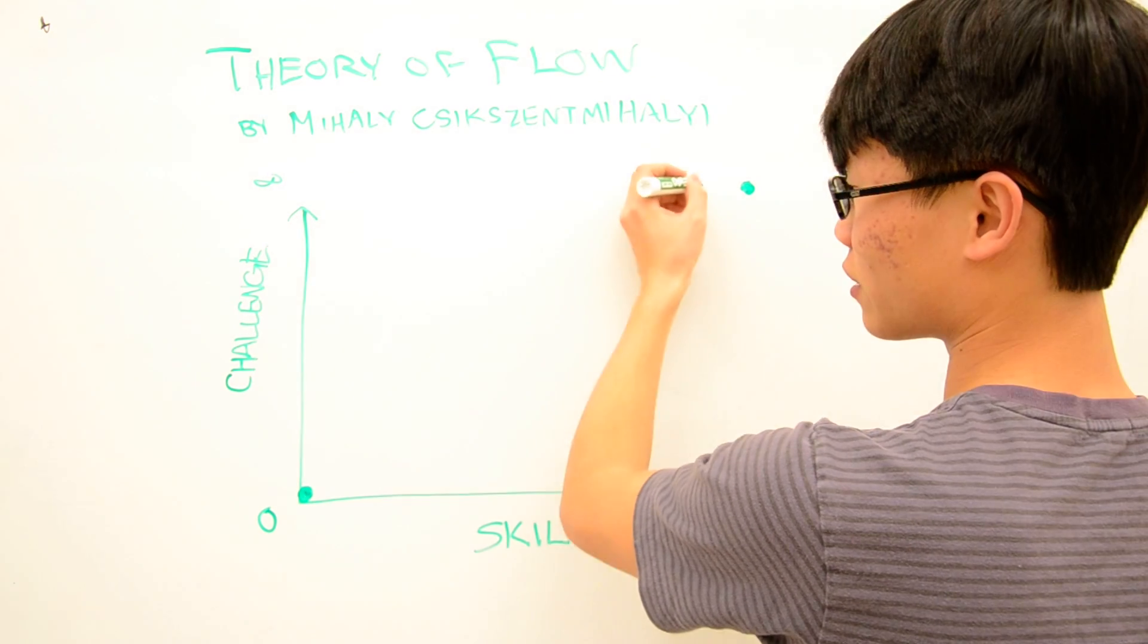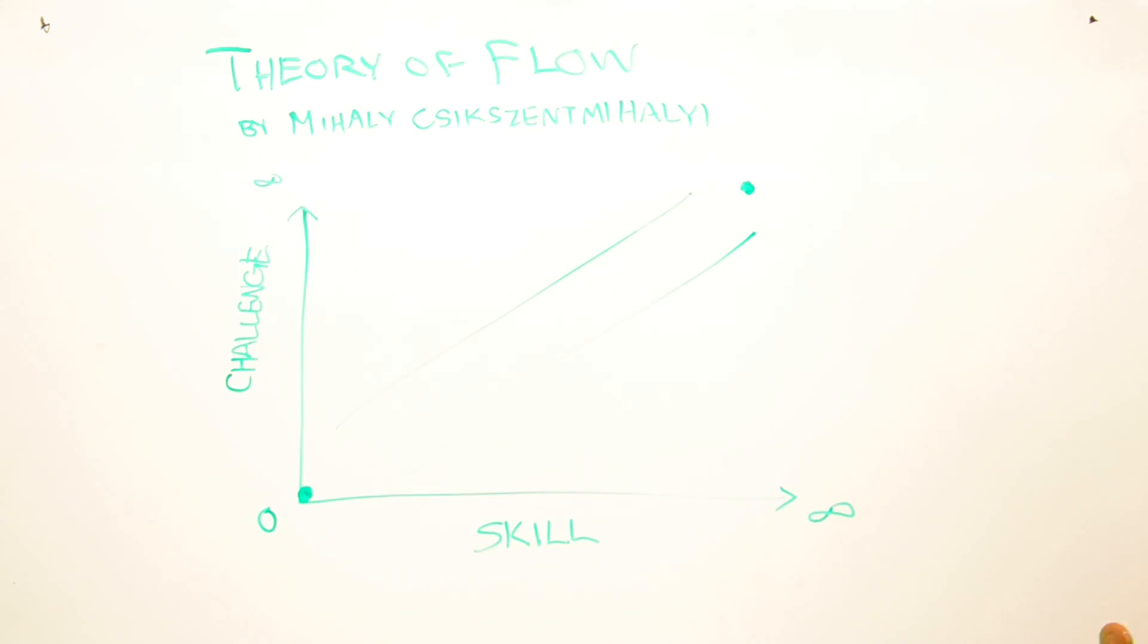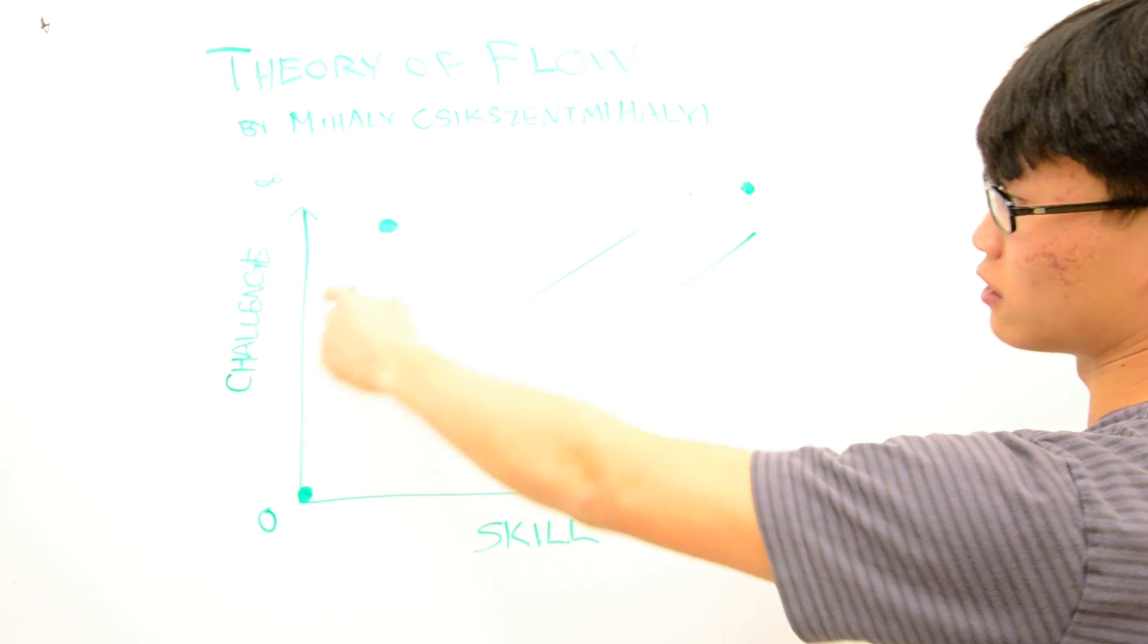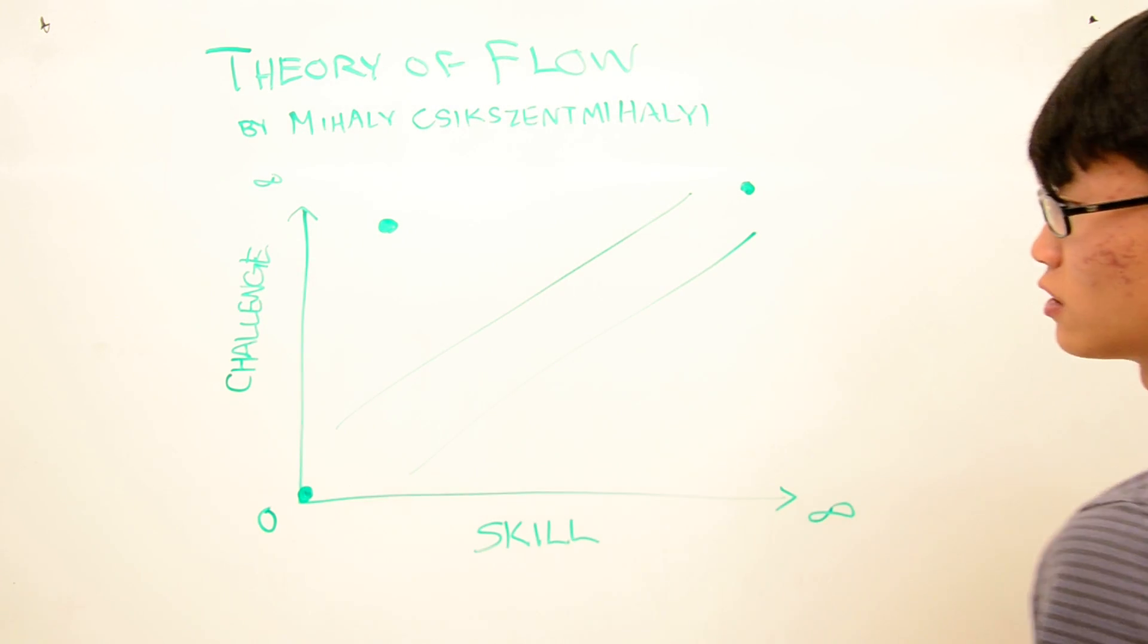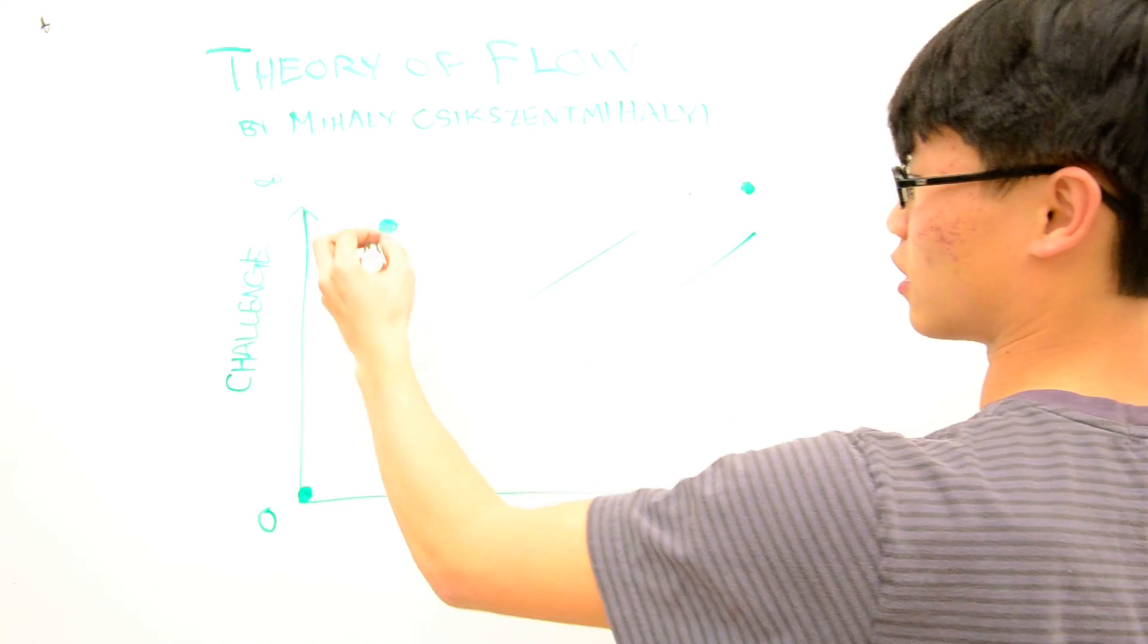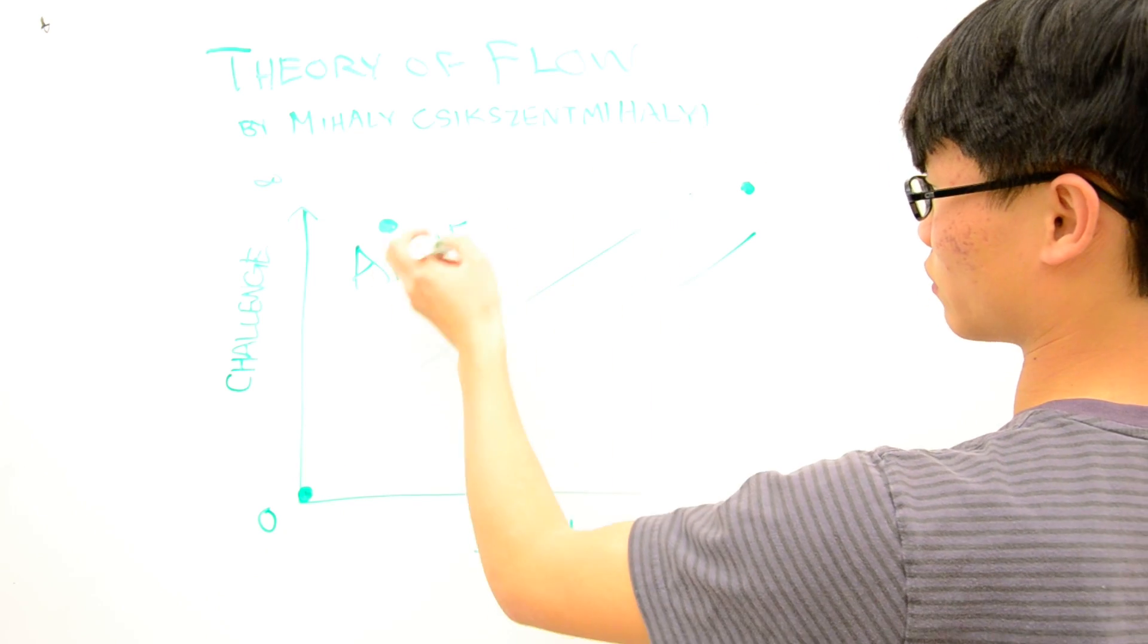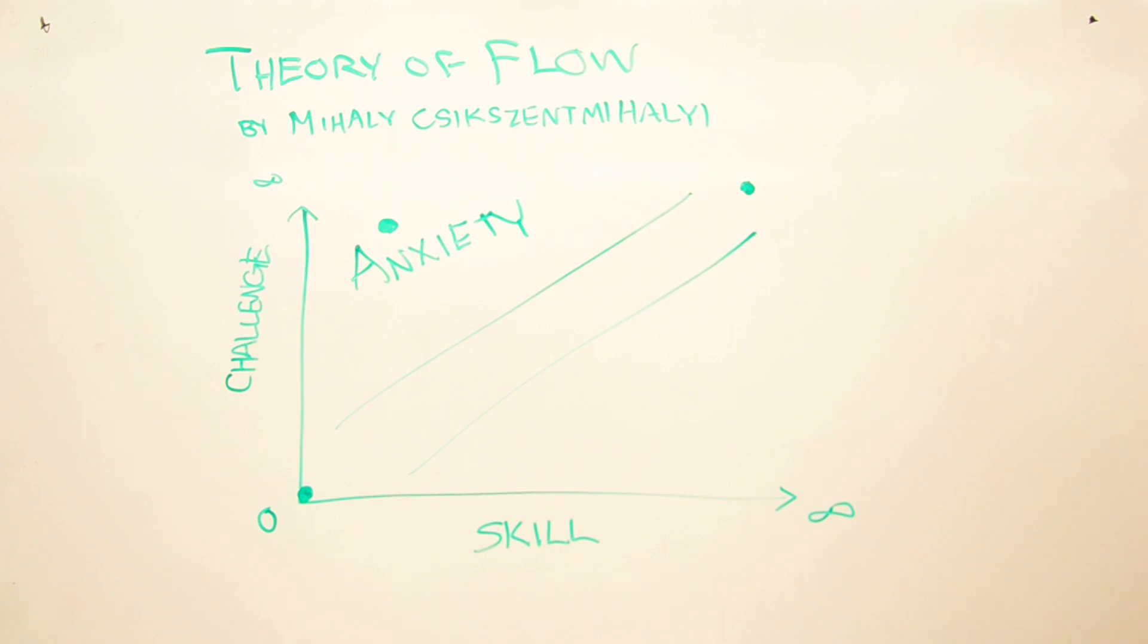Now, there's these areas to the left and right of this. If you're here, what this means is you don't have a lot of skill, and suddenly you're facing a humongous challenge. Now you're second time playing tennis, and suddenly you're playing a professional. You're in this zone, which is obviously not good. We call this anxiety. Anything above the linear line, right through the diagonal, is putting you in a state where the challenge is too high for your skill level.